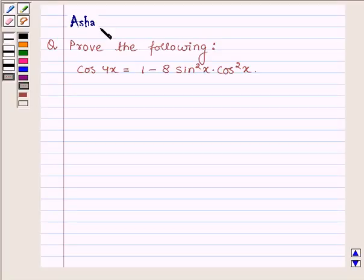Hi and welcome to the session. I am Asha and I am going to help you with the following question. Prove the following: cos 4x is equal to 1 minus 8 sin square x into cos square x.